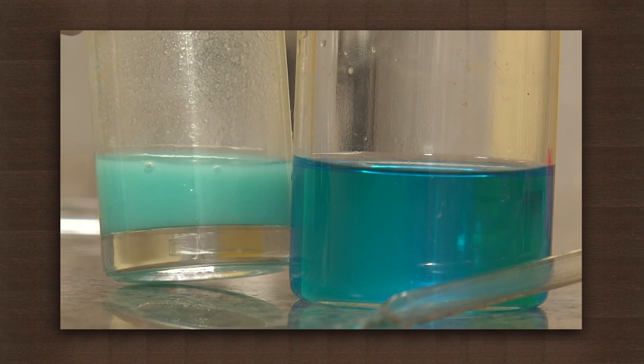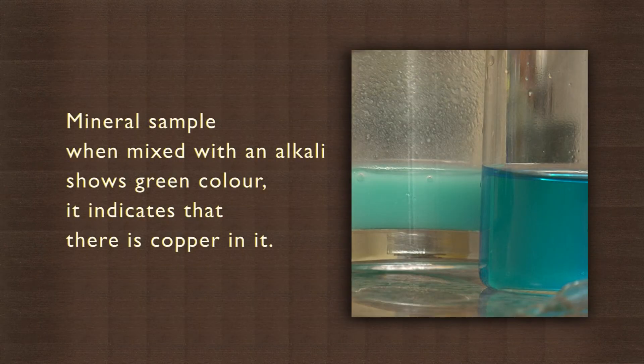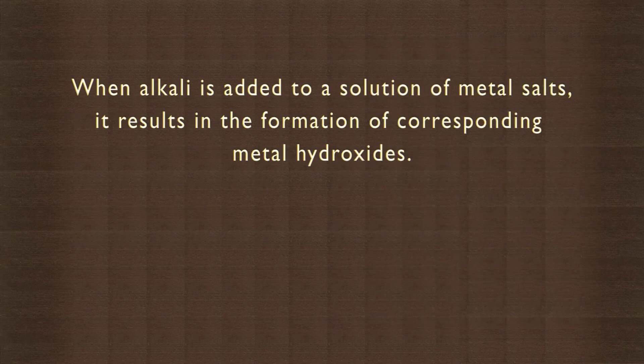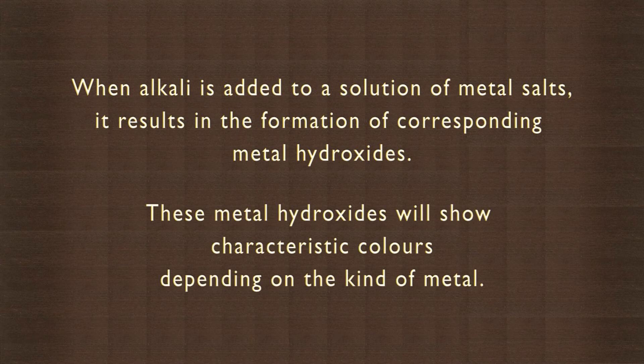So, if a mineral sample, when mixed with an alkali, shows green color, it indicates that there is copper in it. When alkali is added to a solution of metal salts, it results in the formation of corresponding metal hydroxides. These metal hydroxides will show characteristic colors depending on the kind of metal.